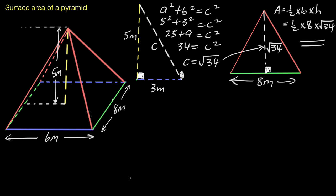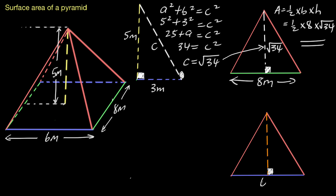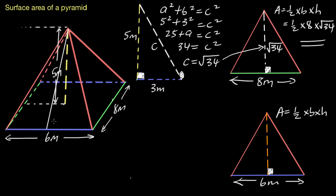Now we'll move on to the front-facing triangle. That triangle has a blue base which is six meters long. We're finding its area the same way: half times base times height. We have six meters for the base, but we don't have the perpendicular height. Coming back to the pyramid, we have five meters, but that's not the same as the slant height that runs down that face on that angle, so we need to find it.